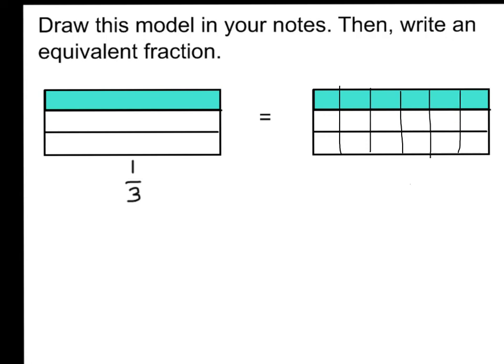So I made eighteen equal parts, and I have six shaded. Six-eighteenths is the same value as one-third, because they're both equivalent. Remember that little sneak peek I'm going to show you for tomorrow? Three times six is eighteen. One times six is six. Therefore, one-third is equivalent to six-eighteenths.